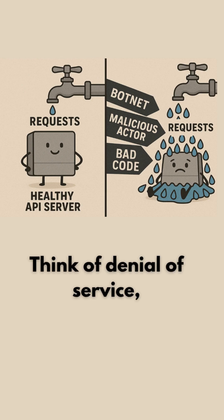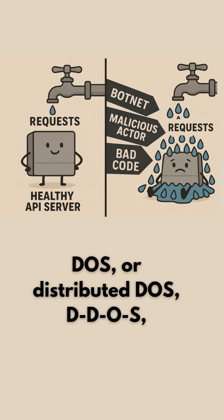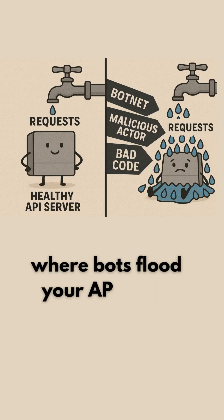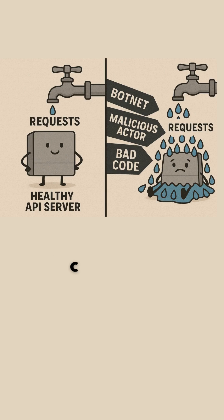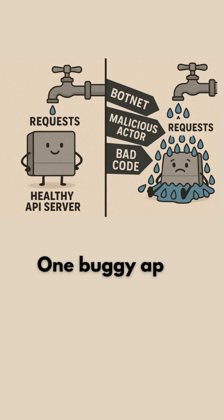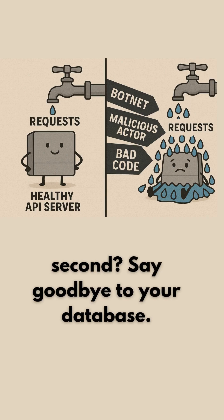Think of denial-of-service (DOS) or distributed DDoS attacks, where bots flood your APIs until everything crashes. But even legit users can be a problem — one buggy app making 10,000 requests per second? Say goodbye to your database.